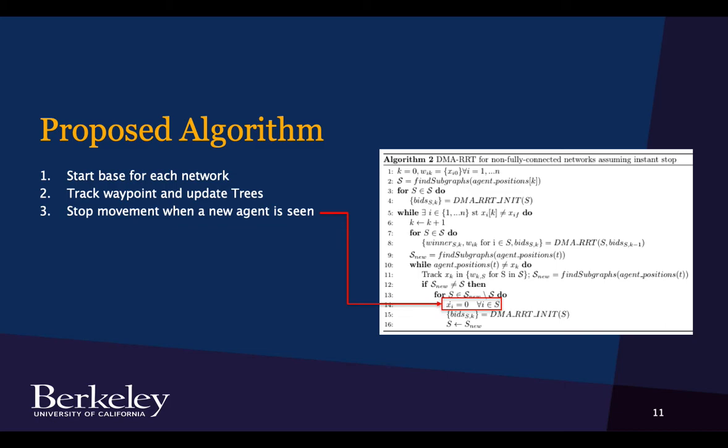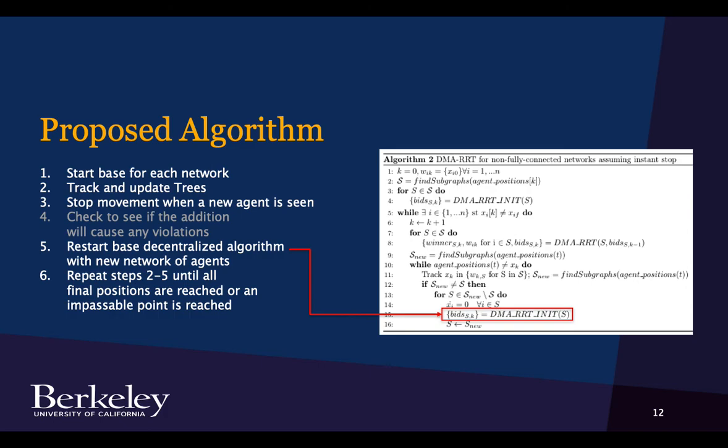And if all the agents are avoiding obstacles with this delta distance, then when they stop immediately, they'll still be safe, they'll still be fulfilling their inter-agent constraints.